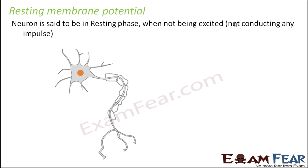The neuron is in the resting phase when it is not being excited — that is, it is not conducting any impulse. For example, let us suppose somebody pinches you. You are sitting quietly on a chair and somebody comes and pinches your hand. That is actually a stimulus, a change in the environment. Your skin is the receptor; it recognizes the touch. The neurons present near the skin get excited because they receive a stimulus. But as long as nobody touched you, there was no stimulus, and that time the neuron was in resting phase. The moment somebody touched you, the neurons got excited — they are in the excited state.